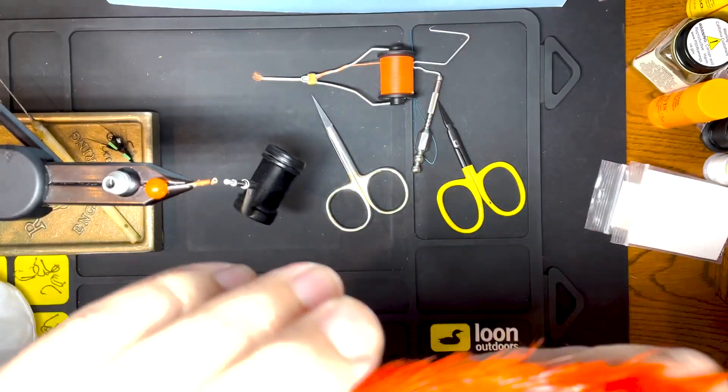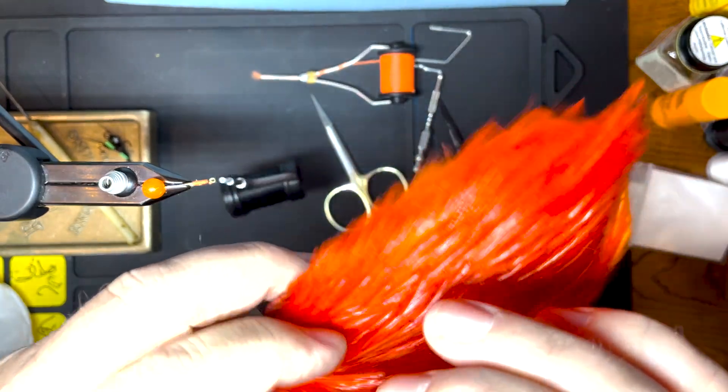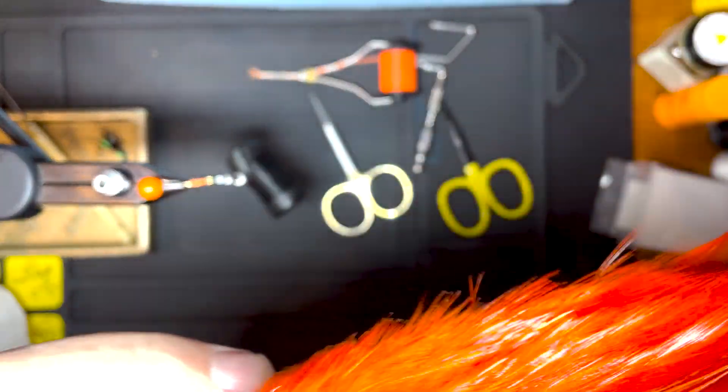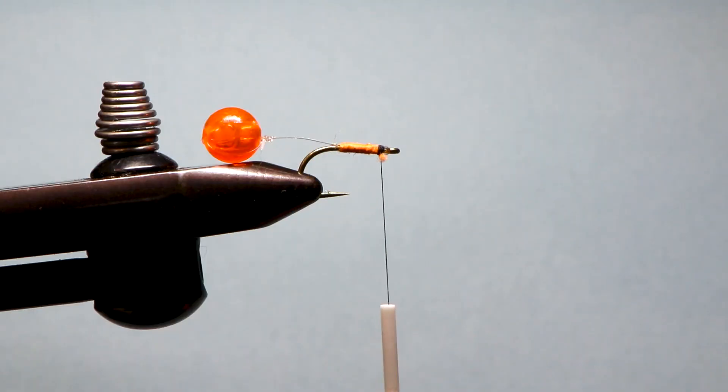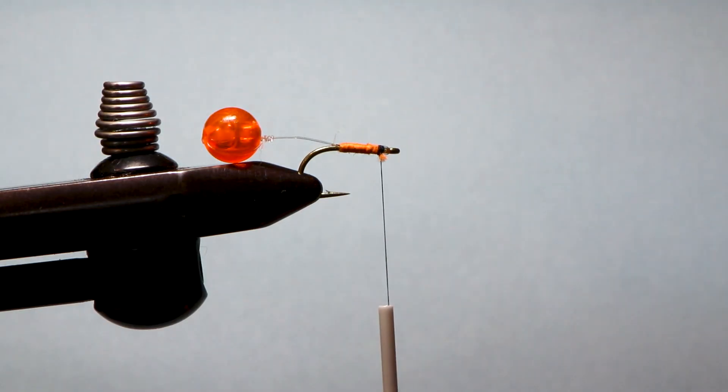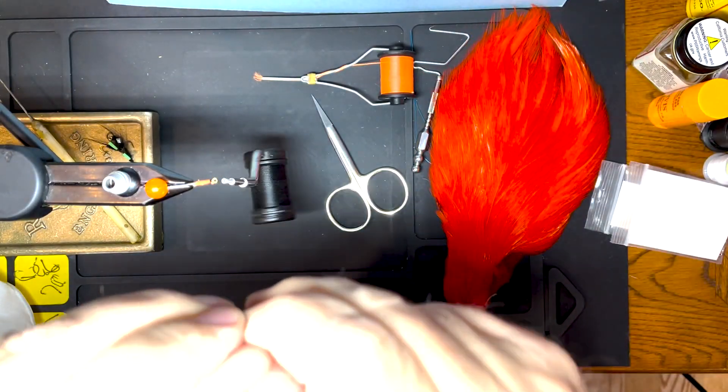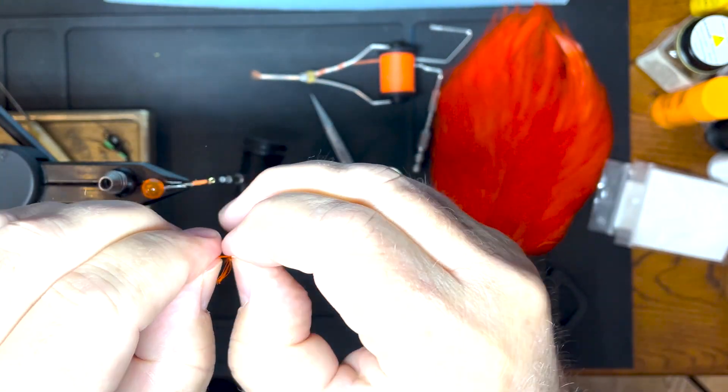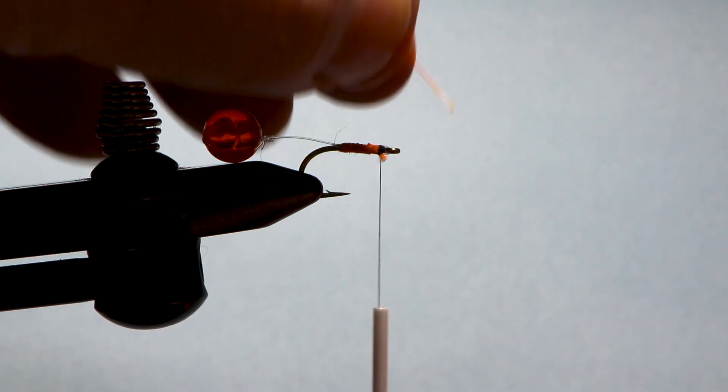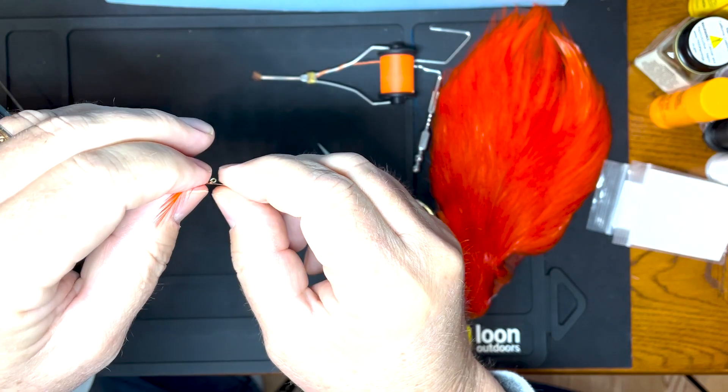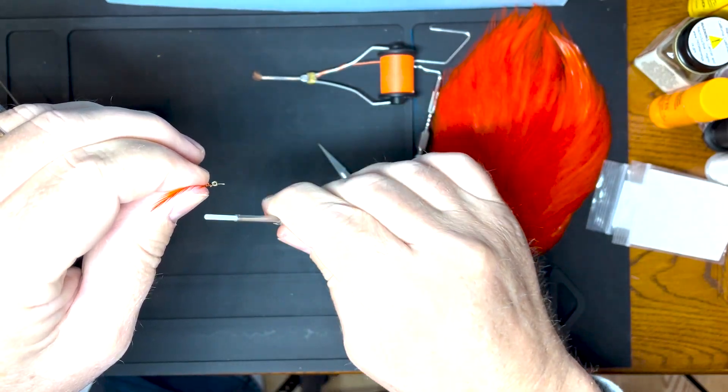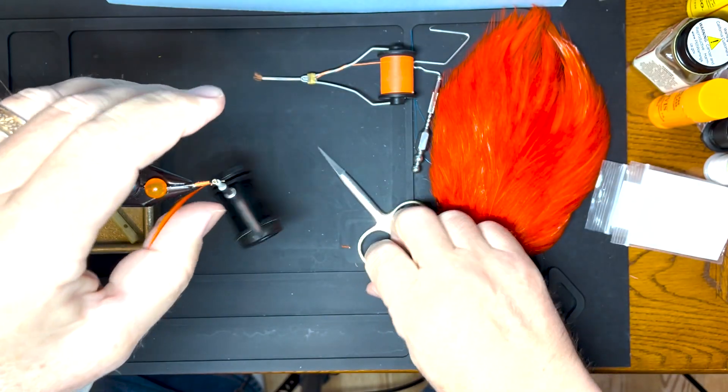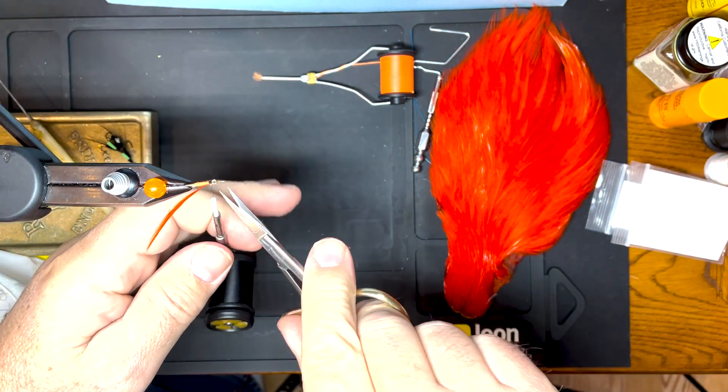And I'm just going to get kind of a webby hen neck saddle hackle. And we'll get that ready. We'll get that tied in with a couple wraps. Trim the stem.